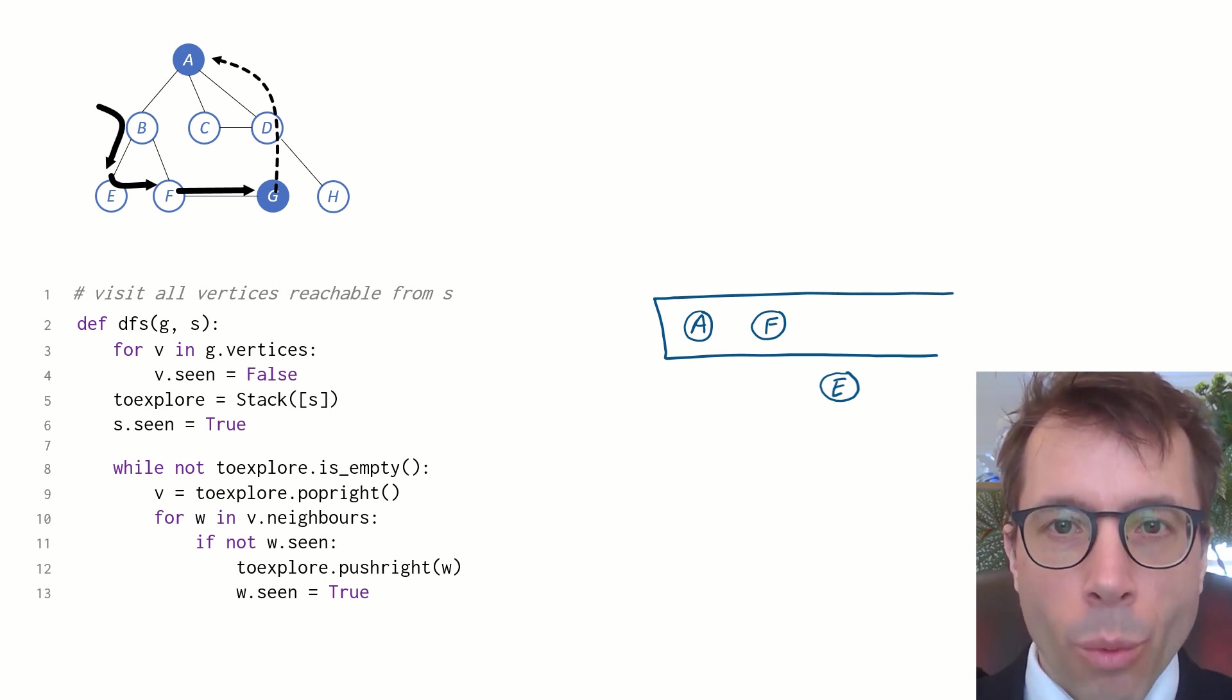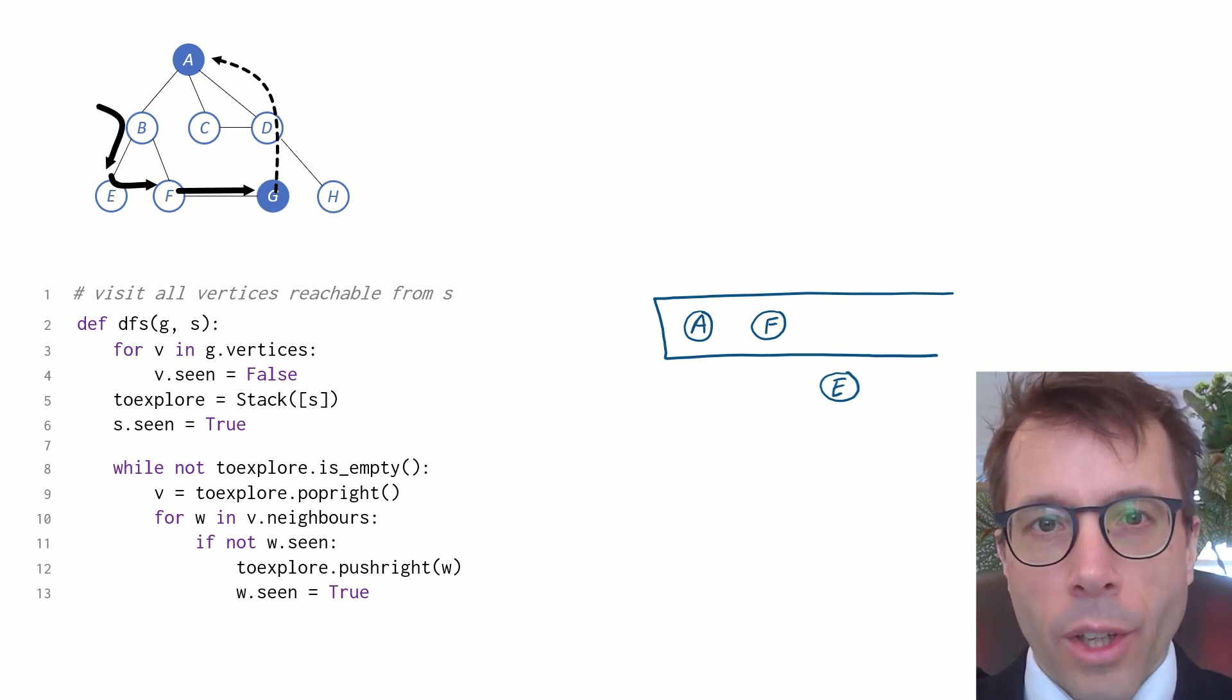Again, we'll pick out the rightmost vertex, this time it's E, and we'll scan through all of E's neighbours. Nothing to see here. E's neighbours are B and F, and both of those we've already marked as seen, so we don't need to push them. That's all we do at E. Next iteration.